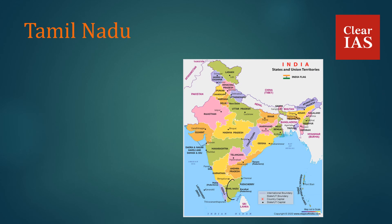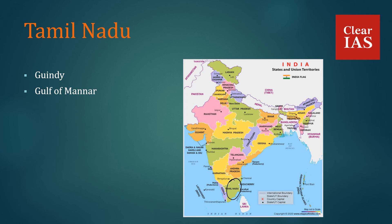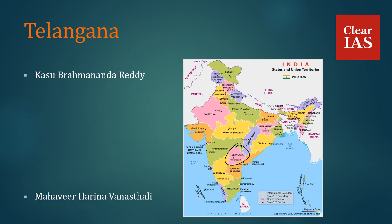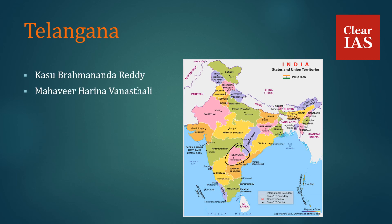In Tamil Nadu, we have Guindy National Park, Gulf of Mannar, Indira Gandhi National Park, Mudumalai, and Mukurthi National Park. In Telangana, we have Kasu Brahmananda Reddy National Park, Mahavir Harina Vanasthali National Park, and Mrugavani National Park.